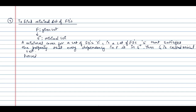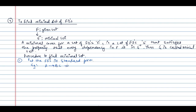So there is a procedure for finding the minimal set. Step one: put the functional dependencies in a standard form. What is the standard form? If there is a functional dependency like A determines BC, you convert it to A determines B and A determines C.